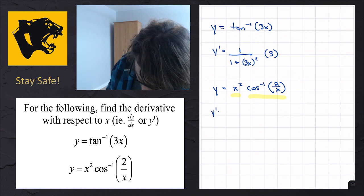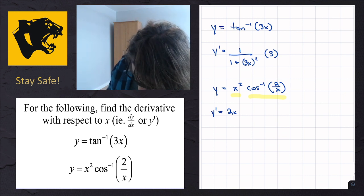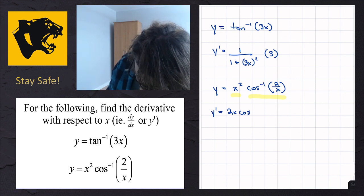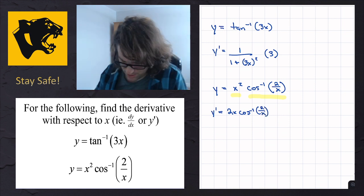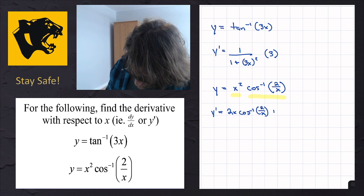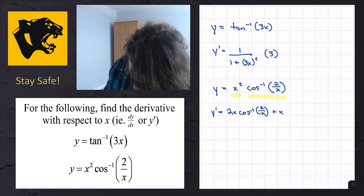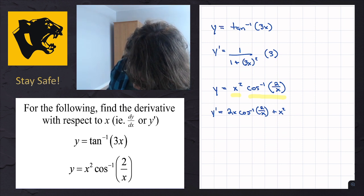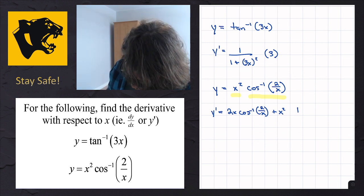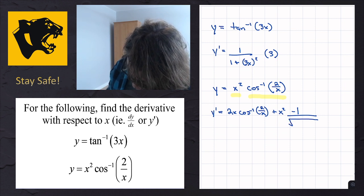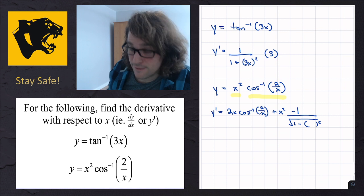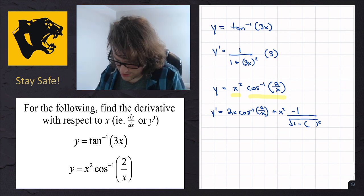The derivative is going to be 2x — taking the derivative of the first chunk and leaving the second one alone, which is the inverse cosine of 2 divided by x. Then I finish the product rule by adding the first chunk left alone, x squared, times the derivative of the next part. The derivative of inverse cosine is negative 1 over the square root of 1 minus the argument squared.